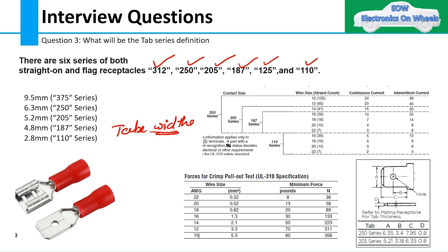What is the tab width? You can see here — this is my terminal and this length 'A' is called the tab width. This value 'A' defines the series of the tab terminal. For example, if my tab width is 6.35 mm, the series of that tab is 250. If my tab width is 5.2 mm, it is the 205 series.